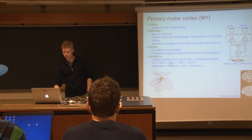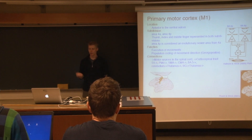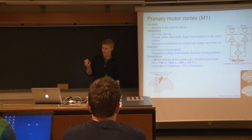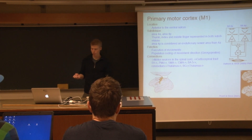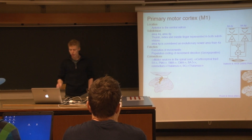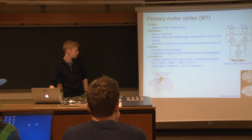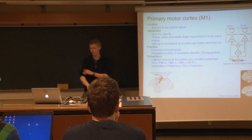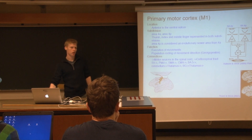The primary motor cortex has direct connections down to the spinal cord through the corticospinal tract. The input to the primary motor cortex comes from many different regions: the primary somatosensory cortex, the dorsal premotor cortex, the supplementary motor areas, cingulate motor areas, and parietal regions. So the primary motor cortex receives a lot of input from a lot of different regions and is densely connected with large parts of the brain.